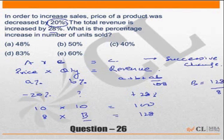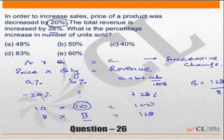So what is the increase? Earlier the value of the quantity was 10, now it is 16. So it is an increase of 60%. That is the second way of doing this question.